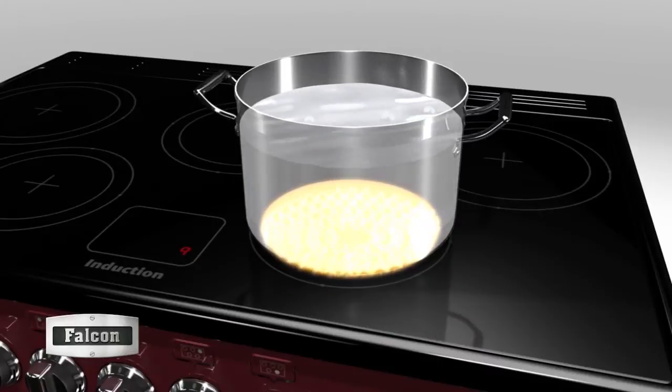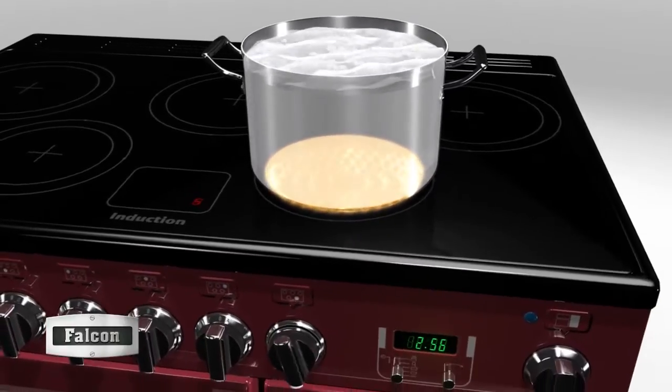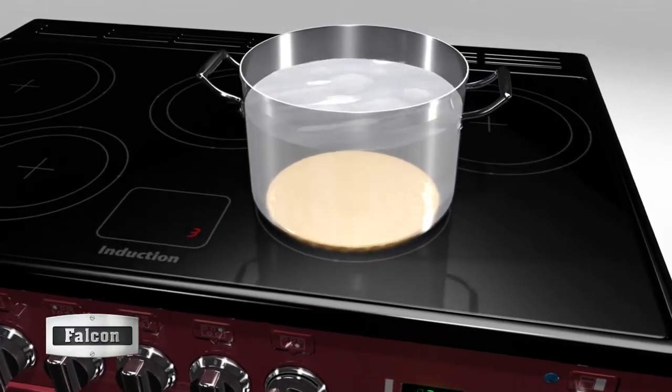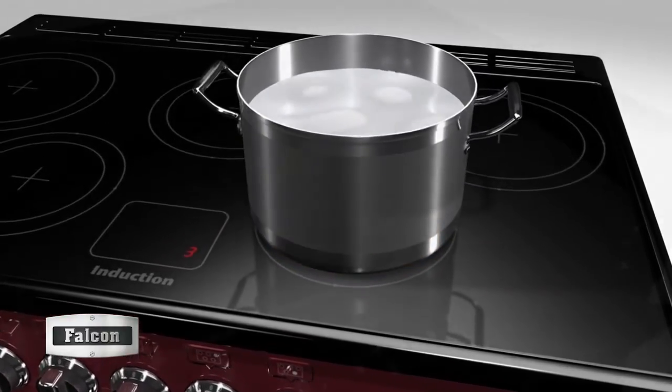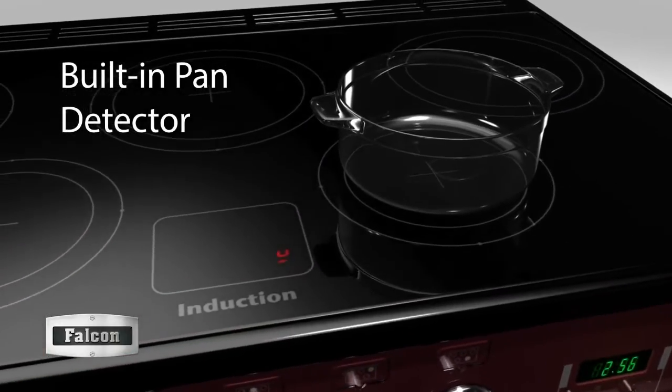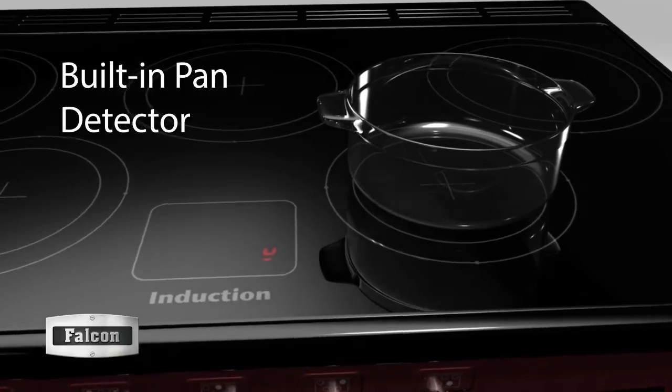Any adjustment of the power has an instant effect upon the metal of the pan base and is immediately transferred to the food being cooked, giving you total control. If no pan is present or it is not induction friendly, then no heat will be generated.